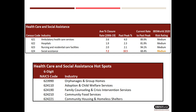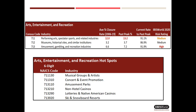The most vulnerable on a six-digit basis appear on the second table. Turning to the arts, entertainment, and recreation segment, performing arts, spectator sports, and related industries endured extremely high closure rates the past 15 years. Of particular concern now are musical groups and artists, and concert and event promotion. No surprise here. The subgroup of amusement, gambling, and recreation industries is red flagged, the most vulnerable businesses being amusement parks and, obviously, casinos.